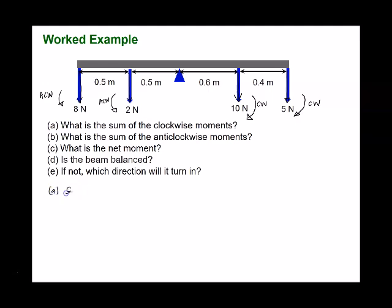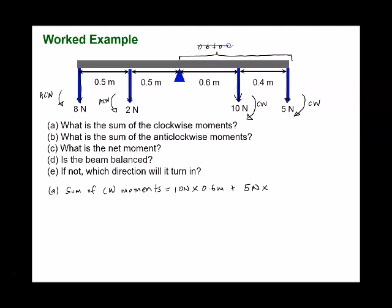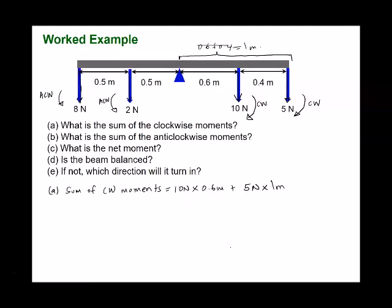The sum of clockwise moments is: 10 N × 0.6 m, plus 5 N × 1 m (which is 0.6 + 0.4 = 1 m from force to pivot). This gives 6 newton-metres + 5 newton-metres = 11 newton-metres.